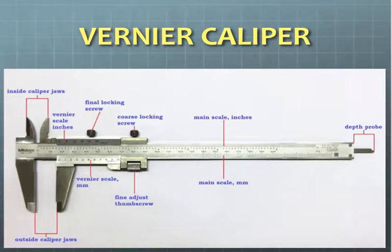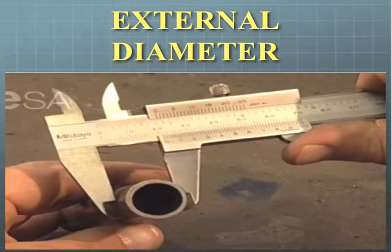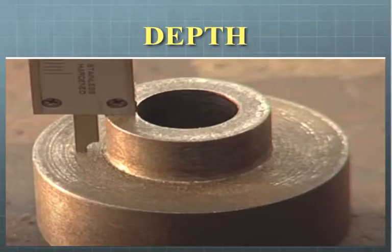Vernier calipers are super useful and a great tool to have in the toolbox. This instrument may be used to measure outer dimensions of objects using the main jaws, inside dimensions using the smaller jaws at the top, and depth using the stem.